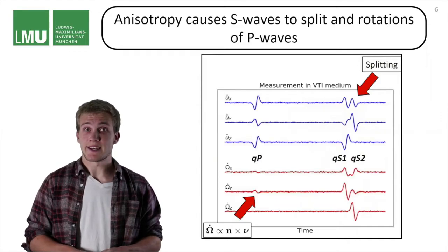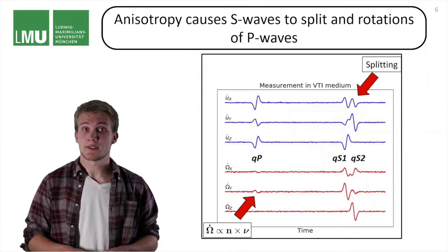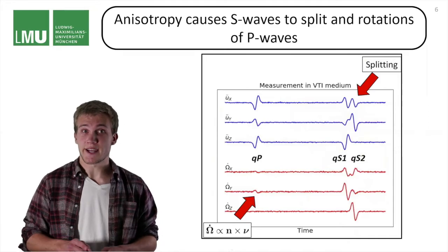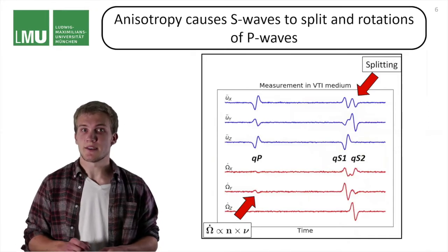Less well known is that due to the anisotropy, P waves may exhibit rotations as well. This is because the polarization of the P wave and the propagation direction are not necessarily parallel.